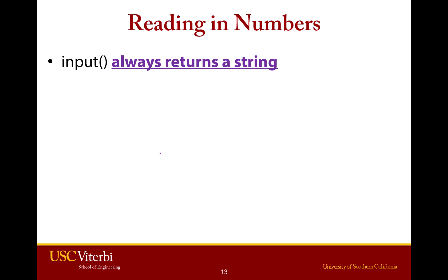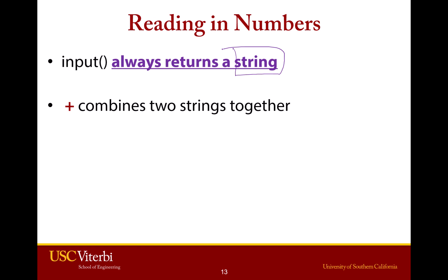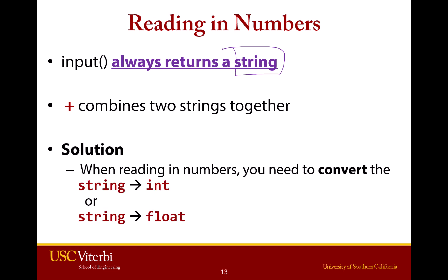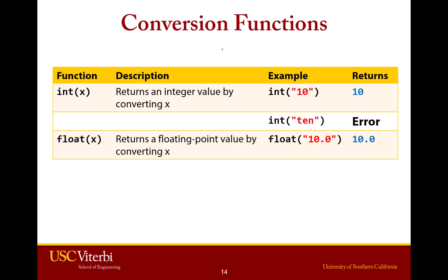The input function always returns a string. No matter what the user has typed in — capital T True, the number 3, the number 4.27 — the input function is going to return a string. We know that the plus sign between strings concatenates them together. So whenever the user has typed in a number and you're expecting an int or a float, we must convert it to be the proper number type. We simply use the int or float function. If you say int('10'), it turns that right into 10. If you say float('10.0'), it turns that right into the float.